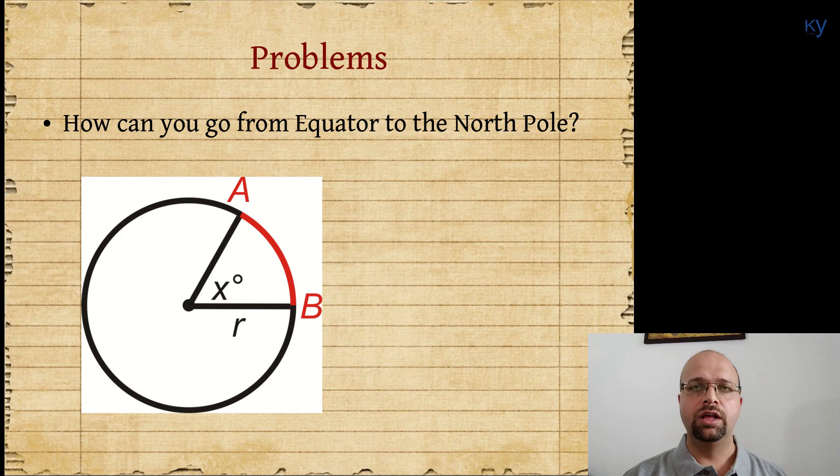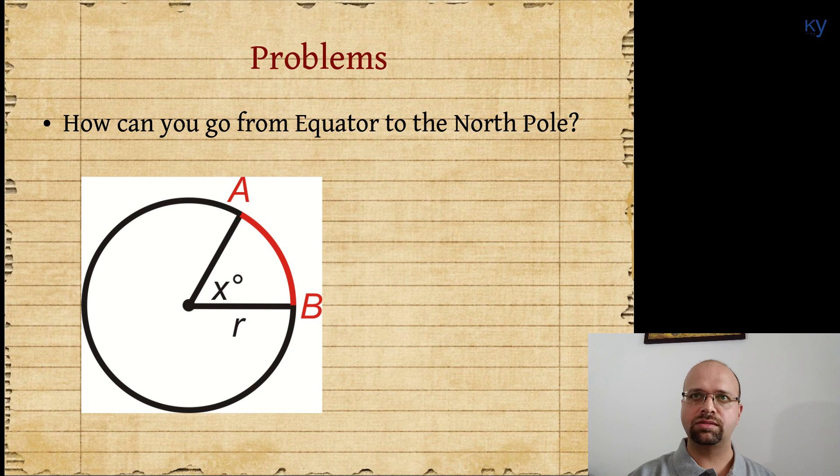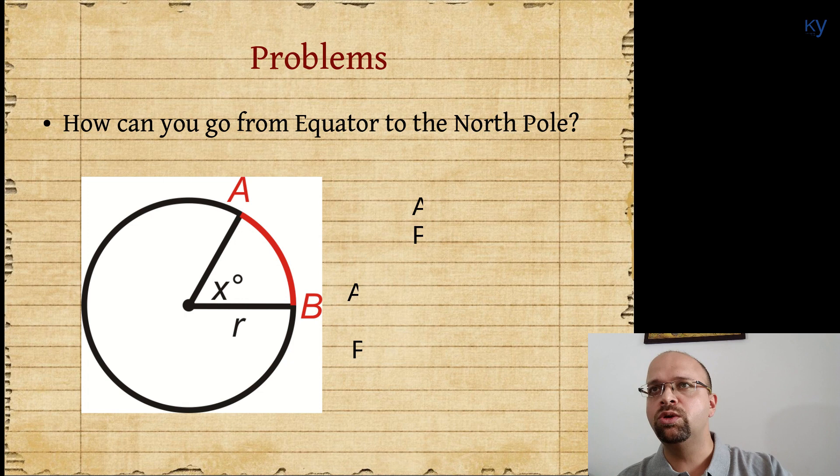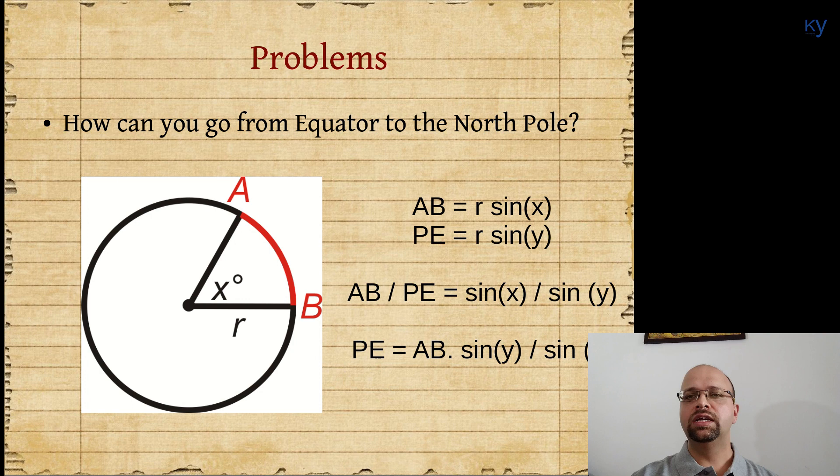Here is where we use trigonometry to help us out. Let's look at a cross section of the earth which is a circle. Let's say B is a place on the equator and A is some point other than the pole somewhere else. Let's say that the angle that these two points subtend at the center is x degrees. If P is the pole, then you can use trigonometry to measure the distance from pole to the equator by actually using the distance between A and B.